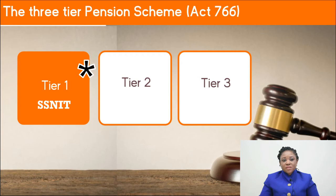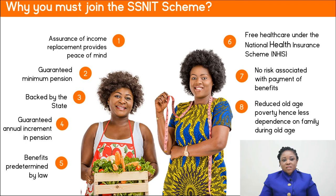The three pension schemes are: first-tier, which is mandatory and managed by SNIT; second-tier, which is also mandatory but managed by fund managers; and the third-tier, which is a voluntary scheme. Why you must join the SNIT scheme: with the SNIT scheme, there is an assurance of income replacement that provides peace of mind for the pensioner, and there is a guaranteed minimum pension paid to all pensioners.